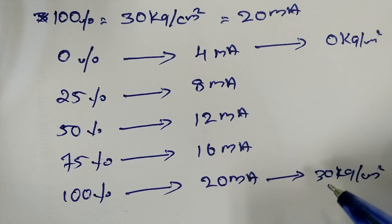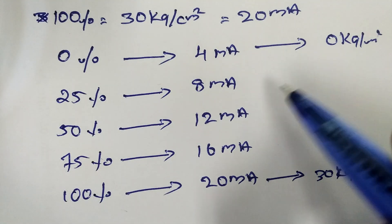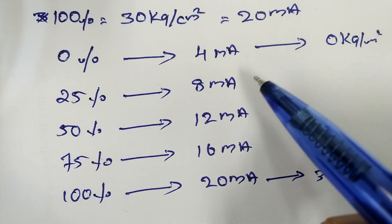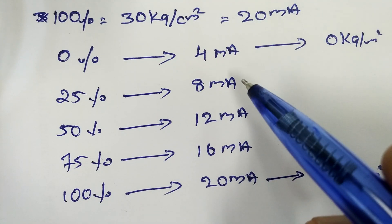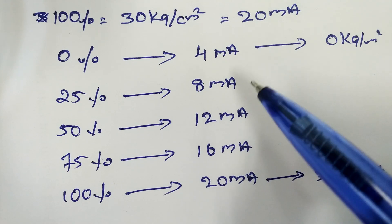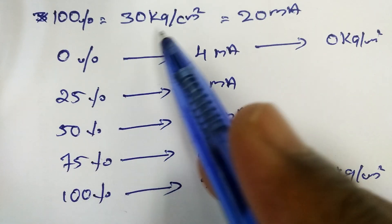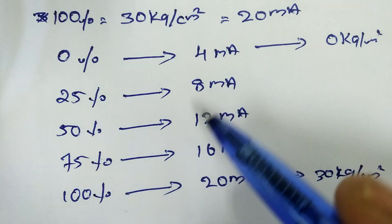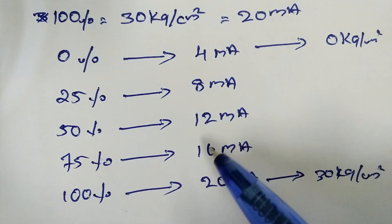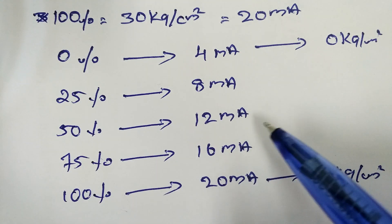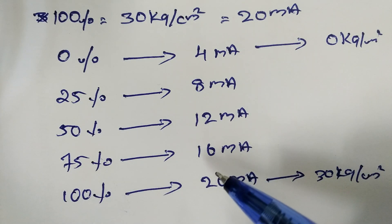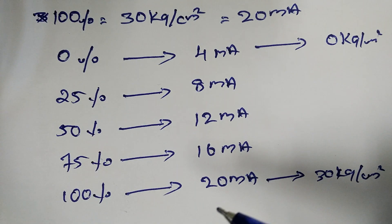When we use a range of 0 to 30 kg per cm², we use equations to find the pressure at each calibration point. This is an easy way to calculate. Suppose the range is 0 to 30 kg per cm².